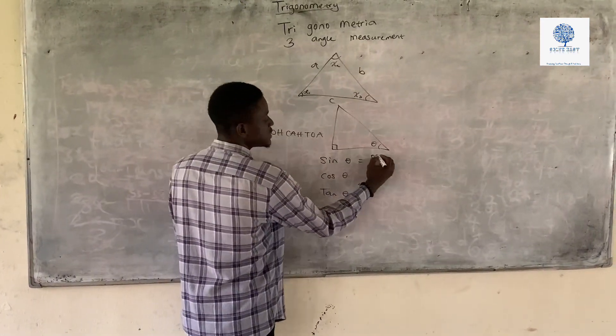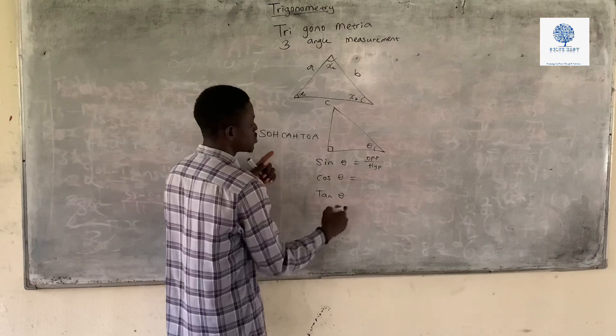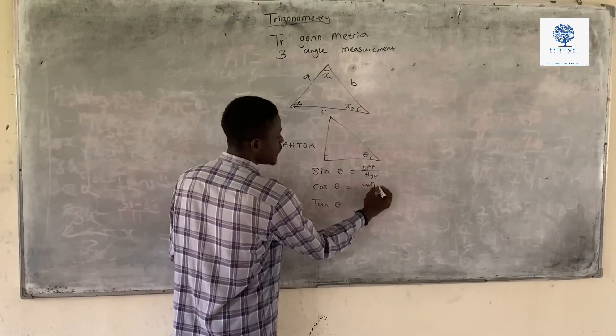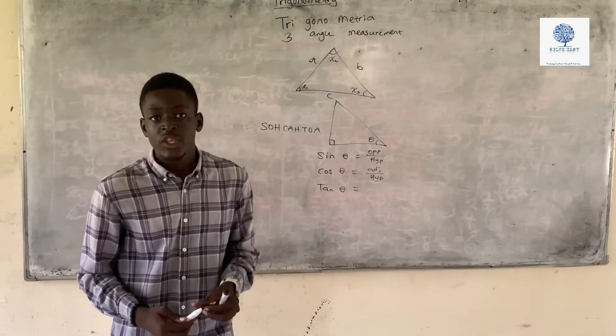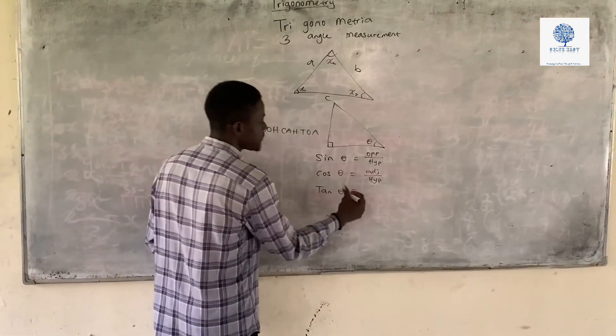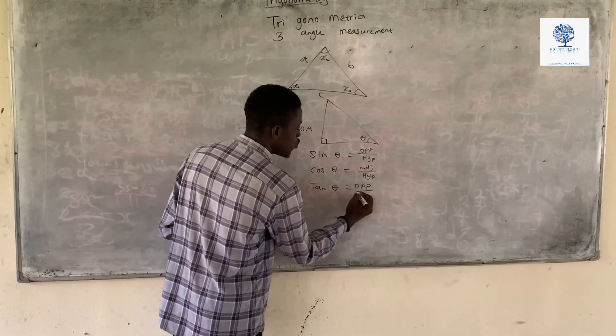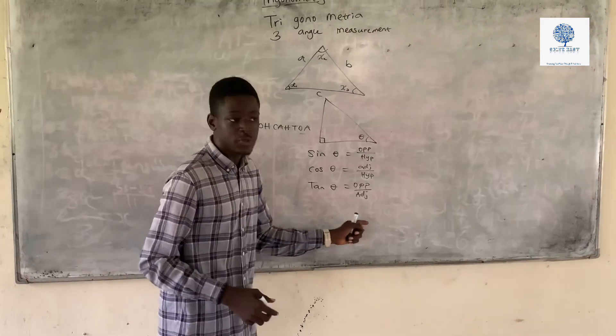Gotten from the SOH-CAH-TOA meaning sin is equal to opposite over hypotenuse, cos is equal to adjacent over hypotenuse, while tan theta is equal to sin over cos. The reason being that we have opposite over adjacent from here, and so since it is opposite over adjacent, this is going to be sin theta over cos theta.